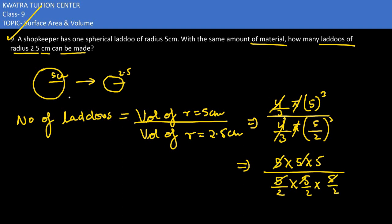5 se 5 cancel ho jaega. So this would be 2 into 2 into 2 which is how many laddus we have? 8 number of laddus.